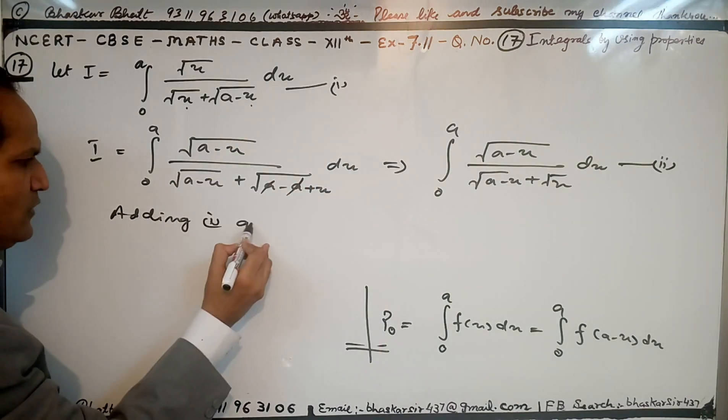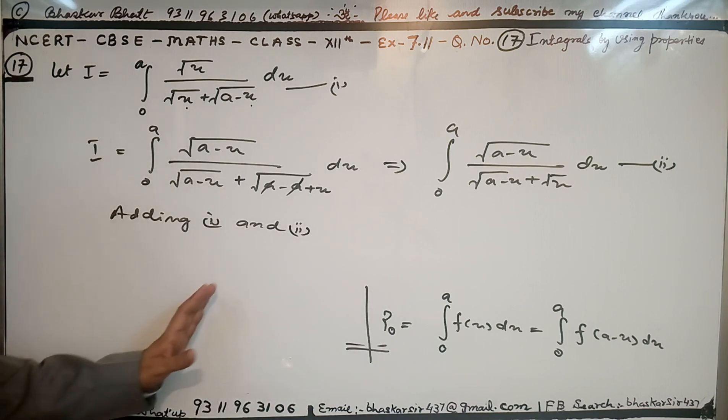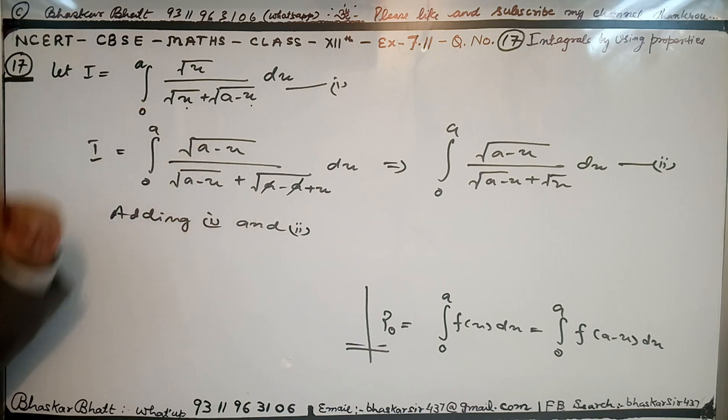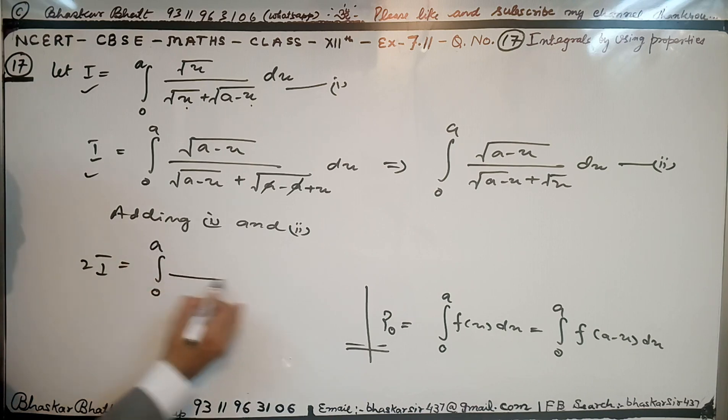This is a very easy question using a simple property of integrals. Adding the first and second equations, we have 2I equal to integration from 0 to a, and the denominator is the same.